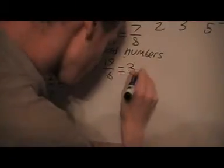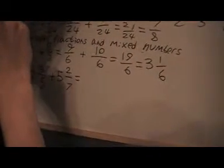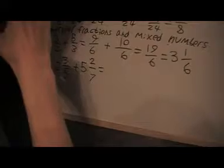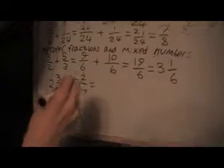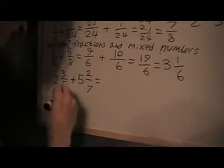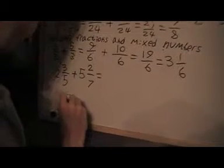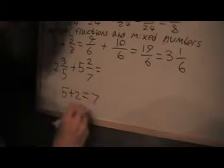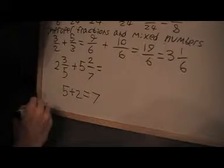Which, you can obviously write as 3 and 1 6th. I think. Yeah. 3 and 1 6th. So, now for this one I add the numbers first and the fractions separately.